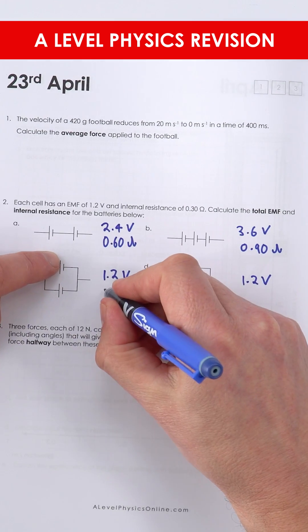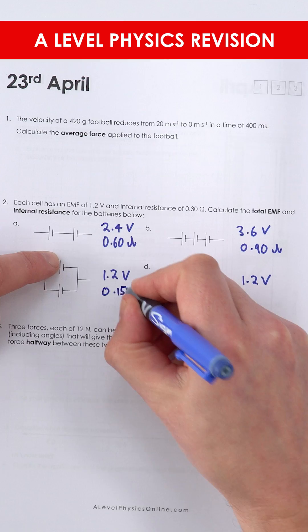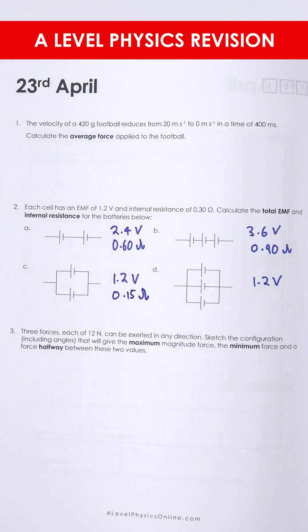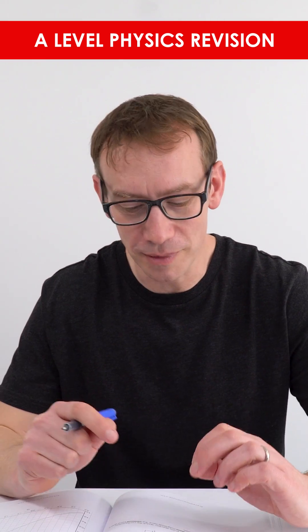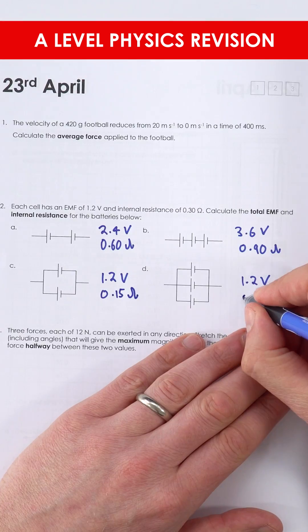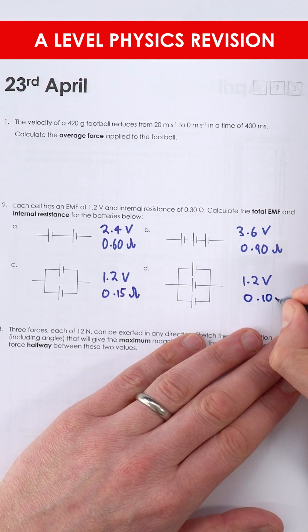So rather than being 0.30, that's now going to be equal to 0.15 ohms. And when we've got three of them, that's going to be the same as three identical resistors in parallel through a third of the original value, which is 0.10 ohms.